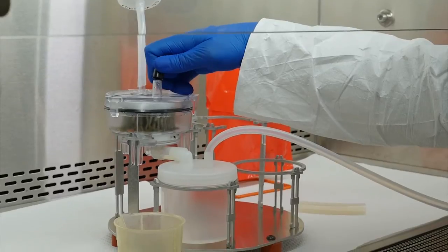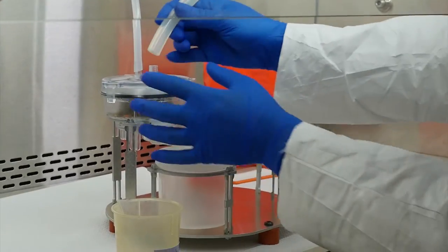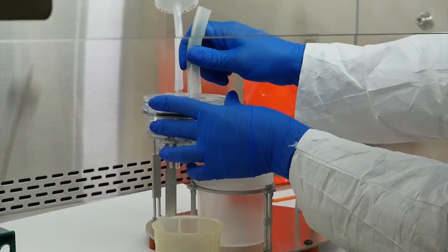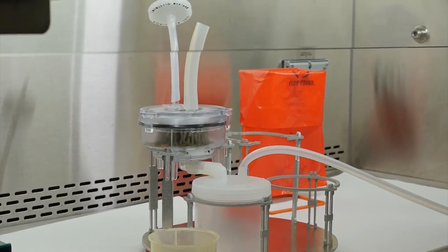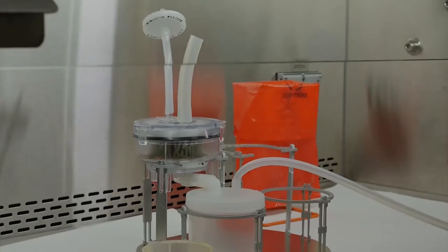Remove the black cap from the top filter inlet and attach the short, wide diameter tubing. Your setup should look like this, and you are now ready to elute your sample.